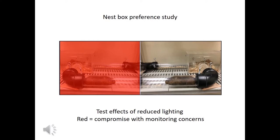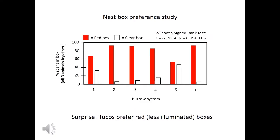To resolve this, I took my expectation that the animals prefer to nest in less illuminated areas and designed a study to determine whether, if given a choice, captive Colonial Tuco-Tucos prefer to nest in less versus more illuminated portions of their burrow systems. The artificial burrow systems in the lab consist of two clear plastic acrylic nest boxes connected by clear plastic tunnels. The experiment decreased illumination in one nest box by constructing it from red rather than clear plexiglass — a compromise that reduced illumination but allowed visual detection of the animals.